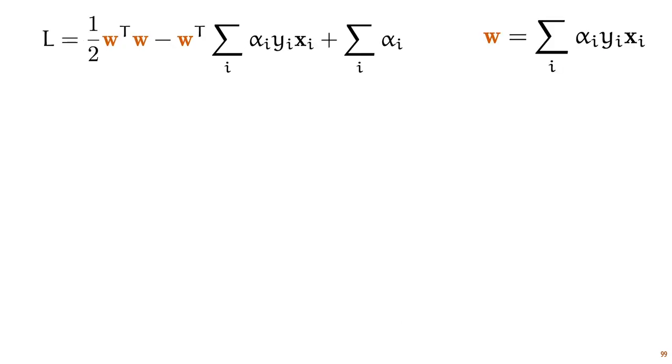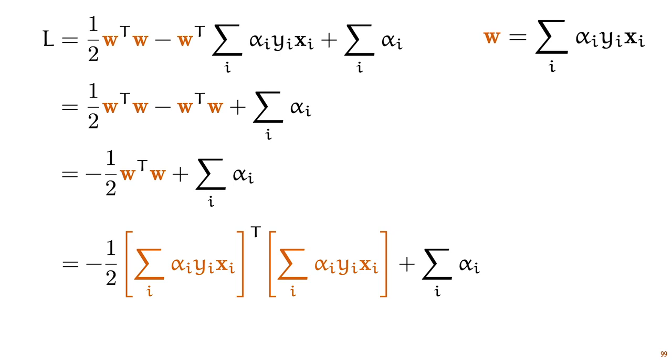So we will combine these two equations. First we do so to add another w by noting that this factor here is equal to w, which gives us this. We now see two terms containing the dot product of w with itself, so subtracting those from each other we get this. Now we fill in the definition of w that we see in the top right corner, giving us this expression. And here we have a formulation of L with all its parameters except the alphas removed.